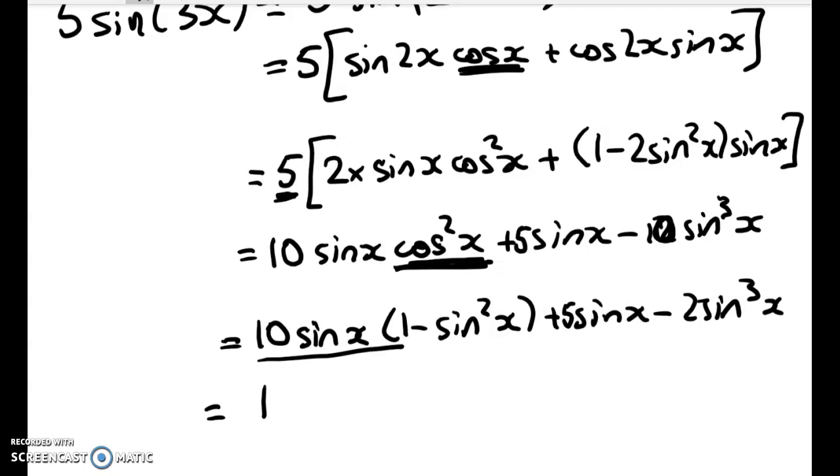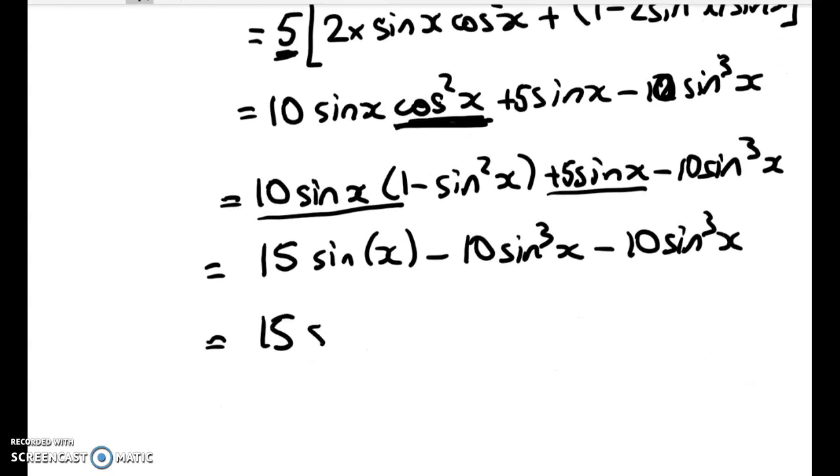So popping that back in. Let's just clean that up. So now I've got 10 sine x here, and 5 more here. So that gives me 15 sine x minus 10 sine cubed x minus 10 sine cubed x. Collecting up like terms gives me 15 sine x minus 20 sine cubed x.